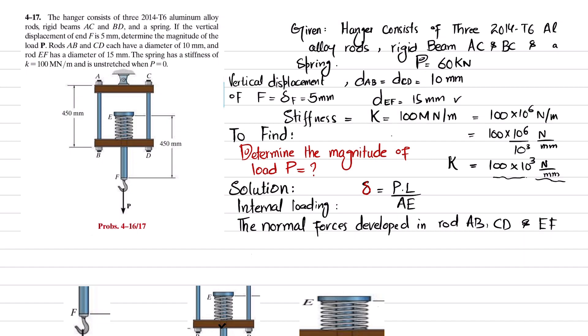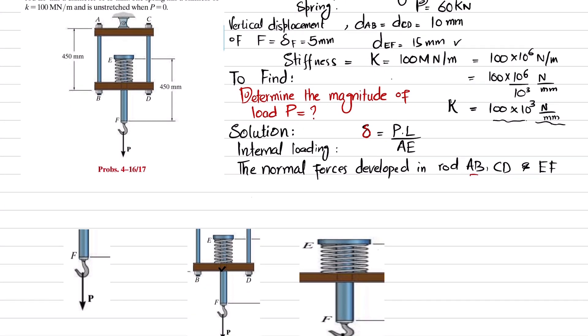We know that change in length is equal to P times L divided by A times E. So we will find the internal load developed in rods AB, CD, and EF.